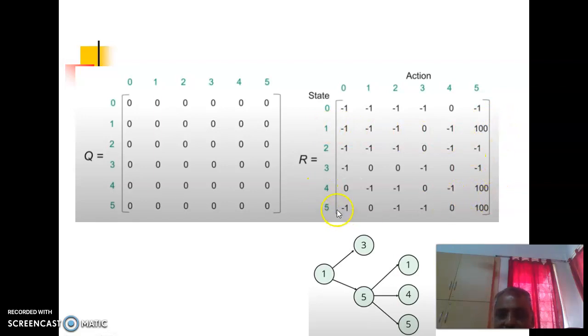4 to 5 hundred, 5 to 5 hundred, so only those rewards we will consider. All other rewards wherever relevant we will give 0 rewards. Where there is no connection at all we will make it as minus 1 entry. Again these are all states, these are all actions.